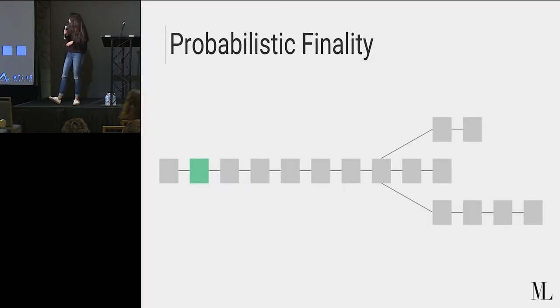So first, we have probabilistic finality. So when we talk about probabilistic finality, we're talking about the finality provided by chain based protocols. And when I say chain based protocols, I'm talking about chains like Bitcoin that use Nakamoto consensus. So in this case, let's say that this green block here, the one that's highlighted, is the one that contains my transaction. With probabilistic finality, the likelihood of the block containing my transaction being revoked decreases as the block sinks deeper and deeper into the chain.